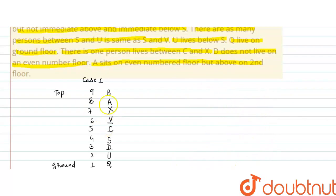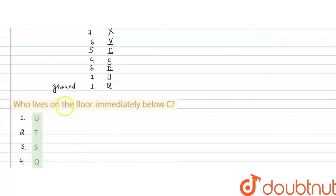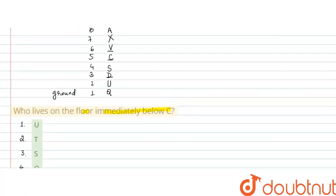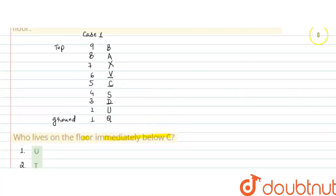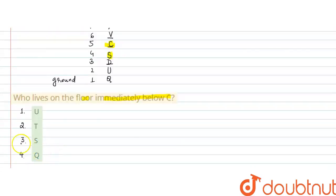यहाँ पर जो हमें arrangement obtain हुआ है, यह correct arrangement है। Question में पूछा हुआ है: who lives on the floor immediately below C? C 5th floor पे रह रहा है, उसके just below S का floor है। So the answer is option 3 — S is the right answer. Hope you like this video, thank you.